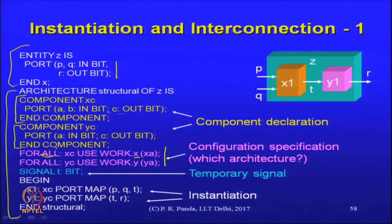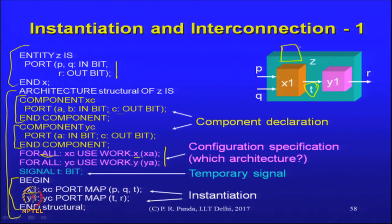We need to point out the need for an intermediate signal T to represent that internal connection — the output of X1 is to be connected to the input of Y1. There are essentially two instantiation statements: one corresponding to the instantiation of the XC component, the other is the instantiation of the YC component. X1 here is the name given to that instance of the component. I could create another instance of XC and call it X2. There is flexibility to choose whatever name we want for our instances — when we have multiple instances, there is the need to differentiate between them by giving them different names.